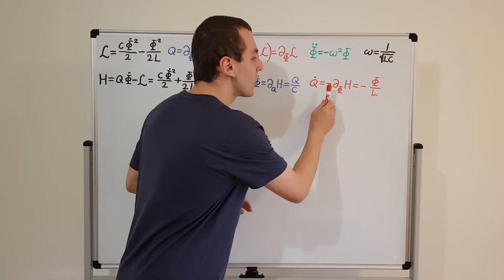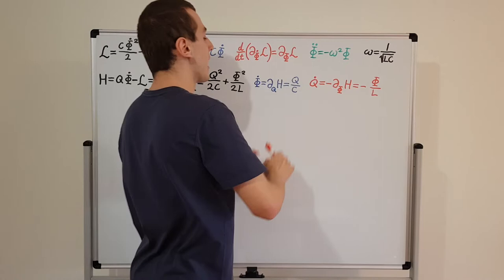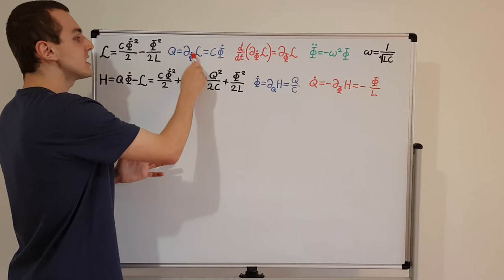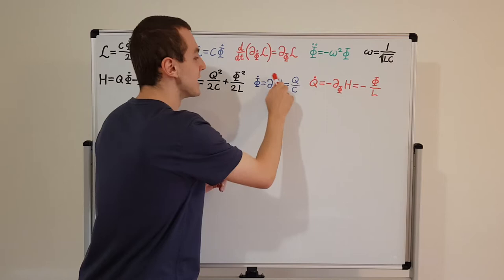We have phi dot and Q dot — these are Hamilton's equations. You can see they are almost symmetric, but not quite, because of the minus sign: there's a minus sign in Q dot and a plus sign in phi dot. All of these equations have been using a condensed notation for the partial derivative, which is far more convenient, especially when we have a lot of partial derivatives.